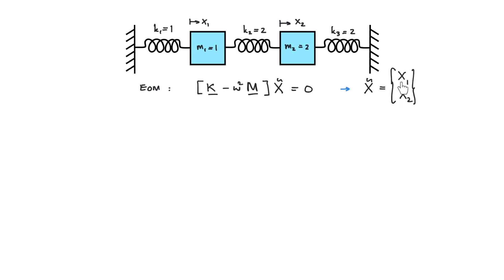The x vector is actually a complex amplitude from the complex exponential notation. Now with the values of mass and stiffness, the matrix in the bracket is 3 minus omega square minus 2, minus 2, 4 minus 2 omega square, multiplied by x1 and x2 equals to 0.